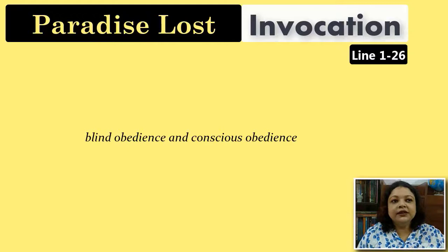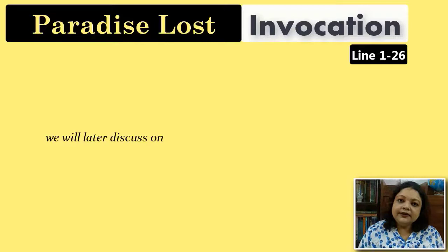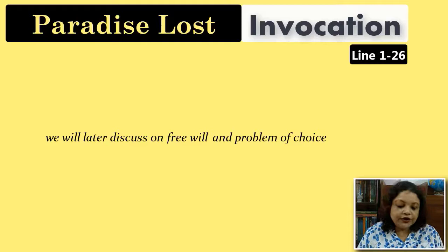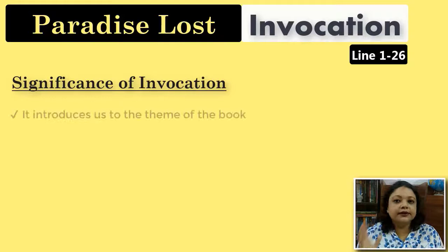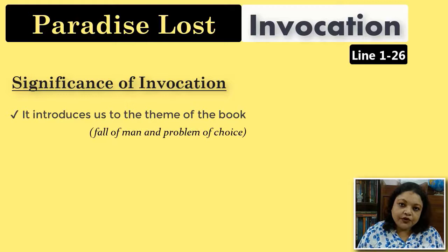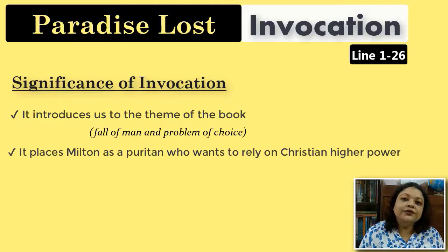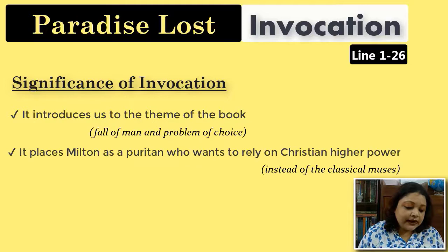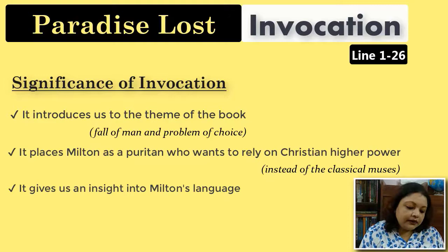So far as the invocation is concerned, remember three things. First, it introduces the theme of the book: the fall of man and the problem of choice. Second, the invocation places Milton as a Puritan who wants to rely on the Christian higher power instead of the classical muses. Third, it gives us an insight into Milton's language — for example, he deliberately reverses the usual English word order repeatedly throughout the invocation.